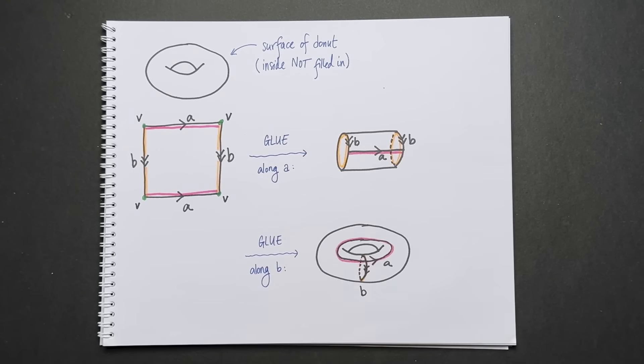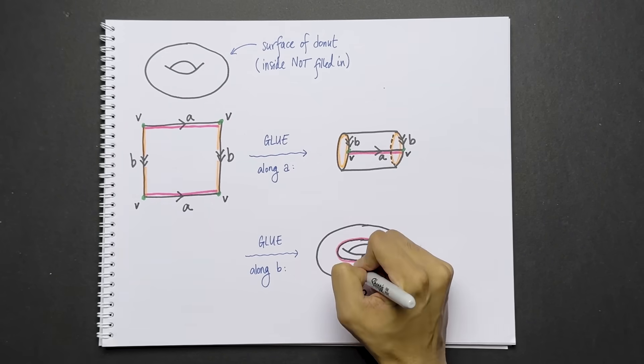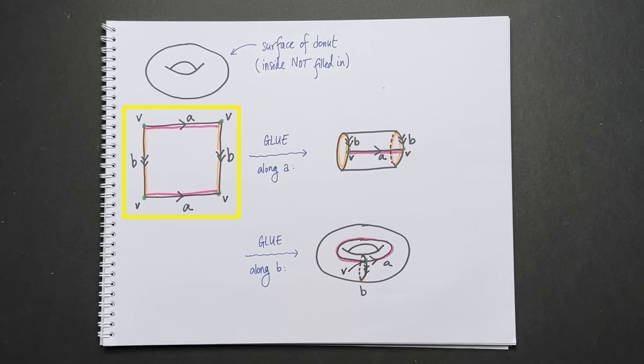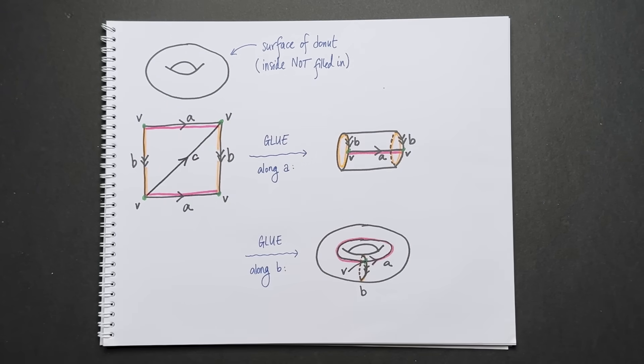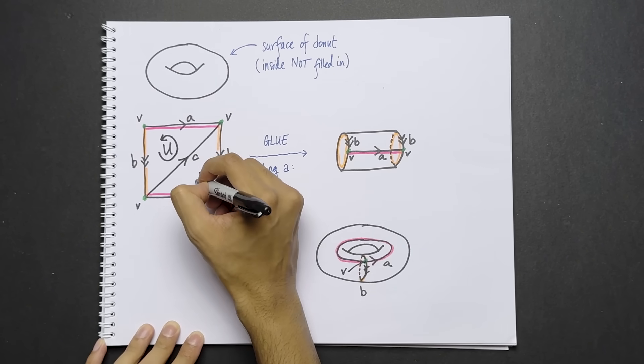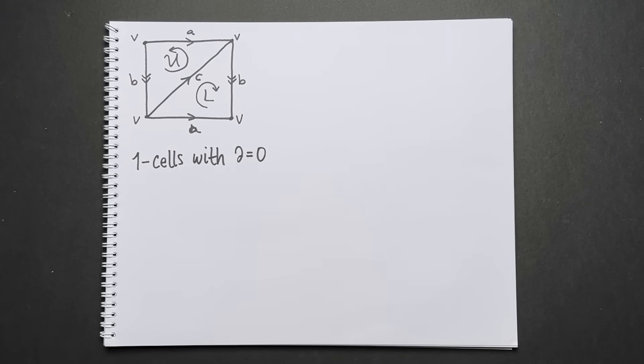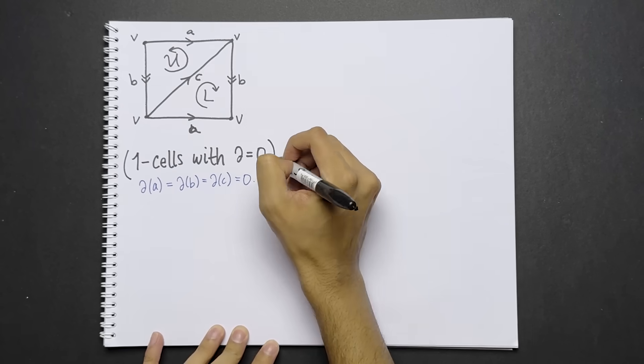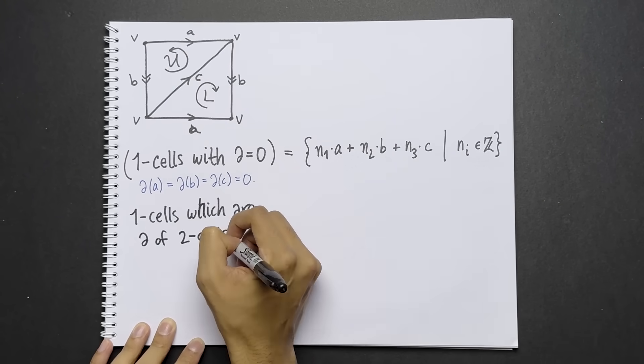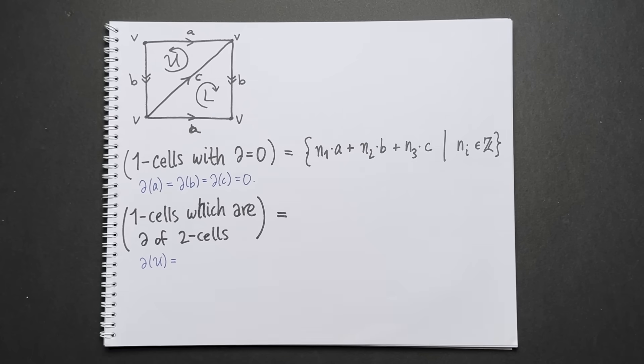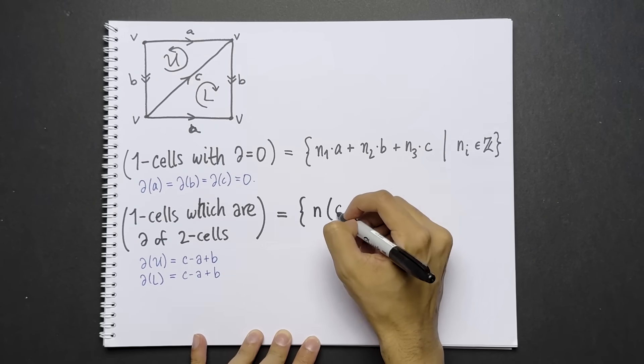Notice that all four vertices of the rectangle, which I'm calling V, and coloring green, become the same point on the torus. They first become these two points on the cylinder, and then they become this one point on the torus. But remember that two cells are triangles. But what we have here is a rectangle. However, if we add one extra one cell here, call it C, then the rectangle is now divided into two two cells. We can call them U and L for upper and lower, and give them some orientation. To calculate the homology, let's first find the one cells with boundary zero, the loops. The cells A, B, C all have boundary zero. So the one cells of boundary zero are all the integer linear combinations of A, B, C. Let's now find the one cells which are boundaries of two cells. The two cells are U and V. The boundary of U is C minus A plus B. The boundary of V is C minus A plus B. So this is equal to all the integer multiples of C minus A plus B.